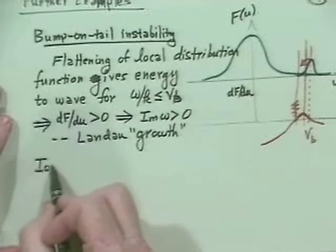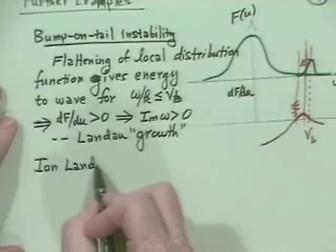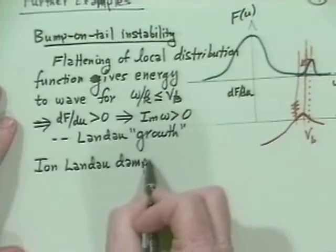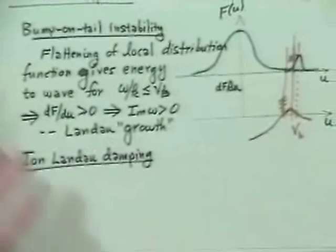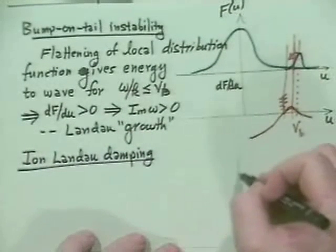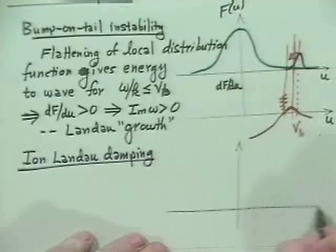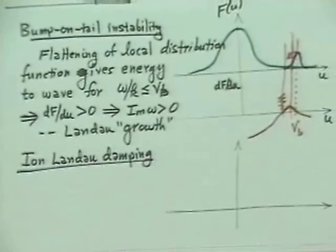Another example is ion Landau damping, and we'll come back to this in a moment. Let's look at the distributions. Suppose we get the same distribution effectively from the ions as from the electrons.